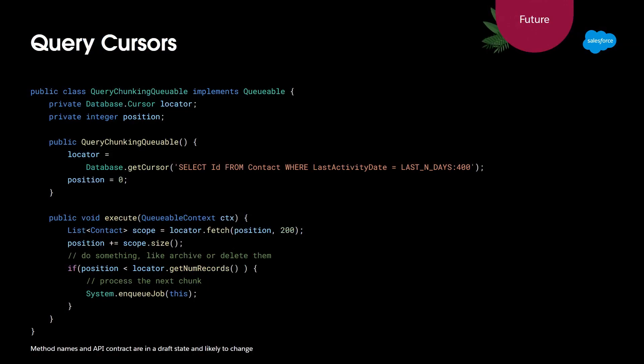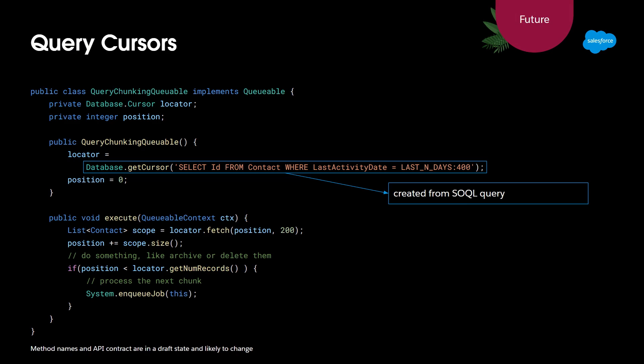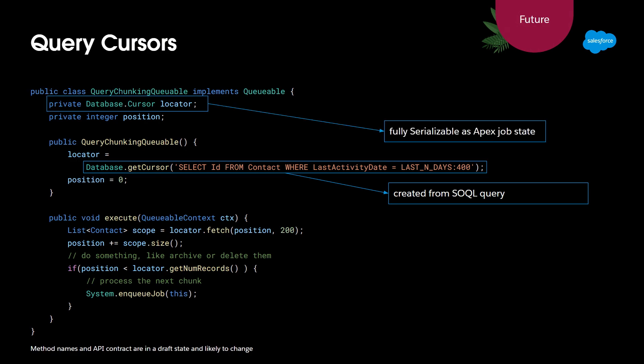Another area we're looking forward to enhancing queueable jobs is the concept of a cursor. Working through this as an example: you could take what would usually look like a normal dynamic SOQL statement, run it, and instead get a cursor back, which stores in the state of this queueable. That cursor is fully serializable, meaning it persists through the execution of that queueable.